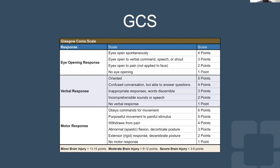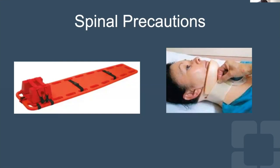The GCS scale runs from 3 to 15: 13–15 is minor brain injury, 9–12 is moderate, and 3–8 is severe. This helps dictate whether a patient may have increased intracranial pressure and whether they need ICP monitoring if the head CT is abnormal. In our patient's case, GCS 15 means he's fully awake and alert — but importantly, that doesn't tell us whether he has a spinal cord injury. A patient can be paraplegic and still have GCS 15.